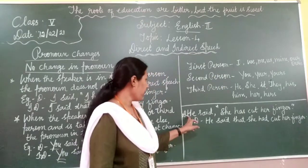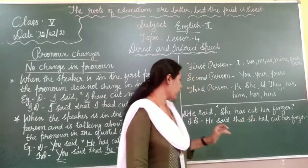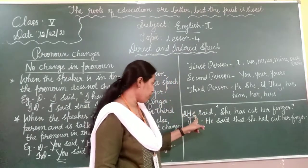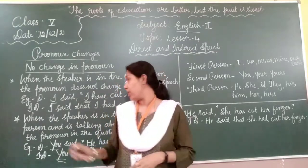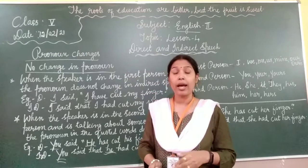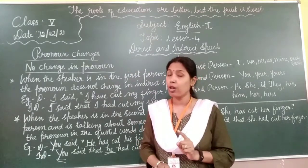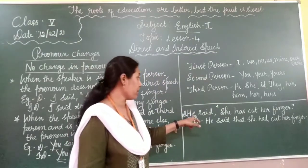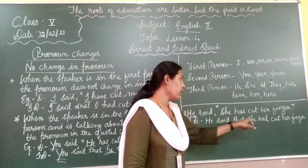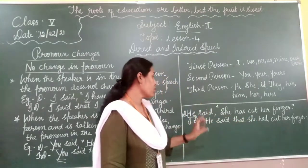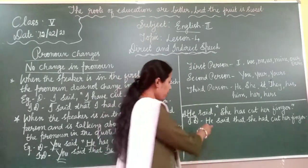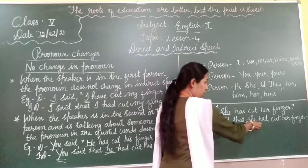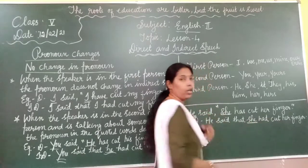One more example: 'He said, she has cut her finger.' Here 'he' is in third person, and he is talking about someone else — 'she'. If the speaker is in second or third person and they are talking about someone else, the pronoun does not change in indirect speech. So in indirect speech: 'He said that she had cut her finger.' No change in pronoun.